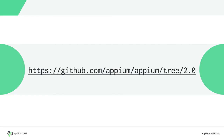Those are some of the highlights for Appium 2.0. There's obviously a lot going on under the hood as we constantly try to keep our code base and workflows moving forward at the same time as developing new stuff. I invite you to check out Appium if you haven't before, and definitely join us at the 2.0 branch on Appium/Appium at GitHub if you're interested in learning more about the code or helping out the project. Thanks!